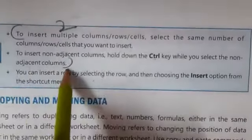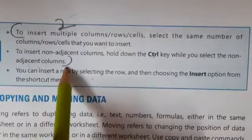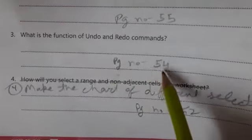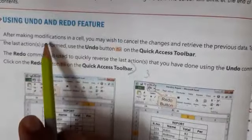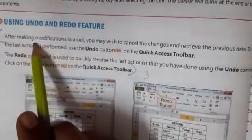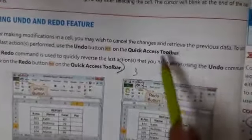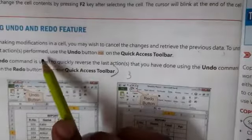Now question number three: What is the function of Undo and Redo command? For this, open page number 54. You have to write these two points. After making modification in a cell, you may wish to cancel the changes and retrieve the previous data. To undo the last action, use Undo button from the Quick Access toolbar.